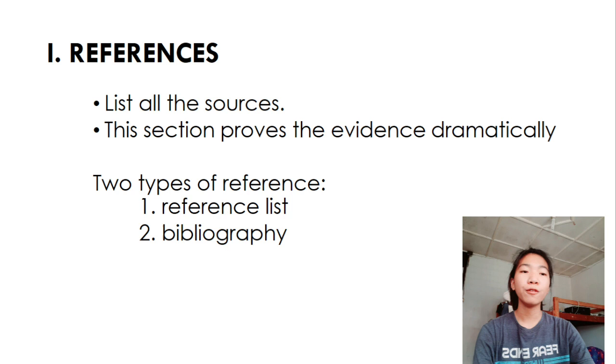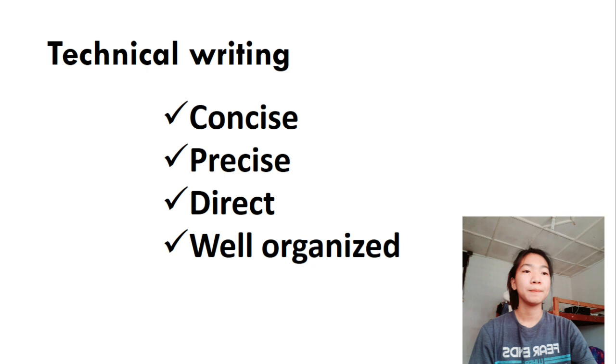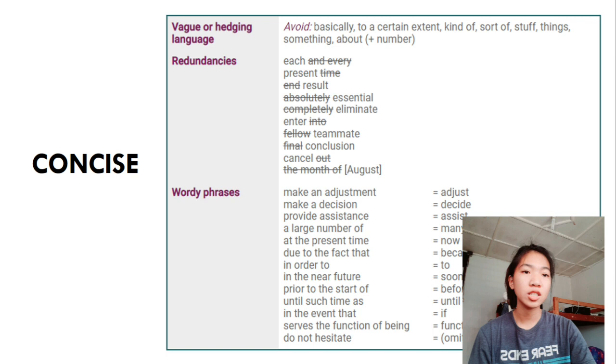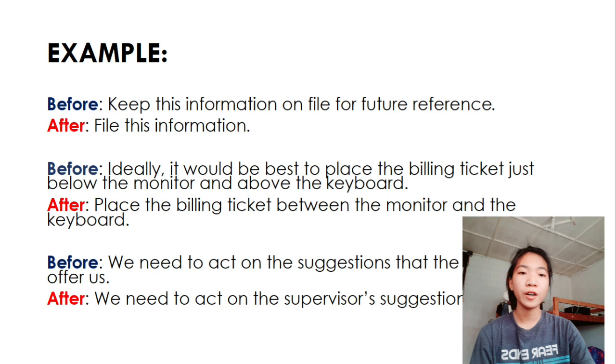Now let's move to the lecture 3 style of writing. Technical writing should be concise, precise, direct, and well-organized. When we say concise, it should not be vague or hedging language. There's no redundancy and wordy phrases. For example, instead of keep disinformation on file for future references, we can say file disinformation.